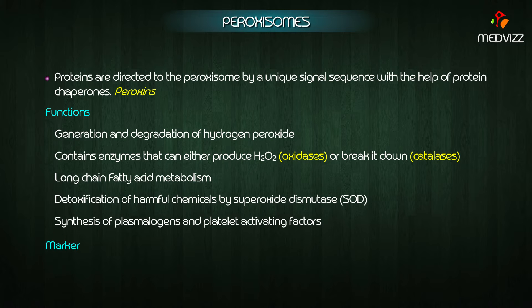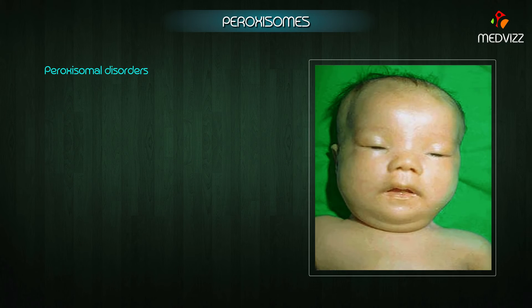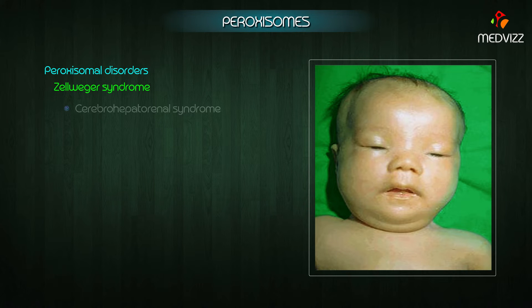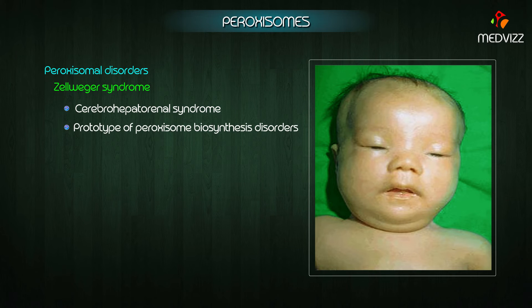The marker is uric acid oxidase. Regarding peroxisomal disorders, Zellweger syndrome is also known as cerebro-hepato-renal syndrome and is the prototype of peroxisome biosynthesis disorders.